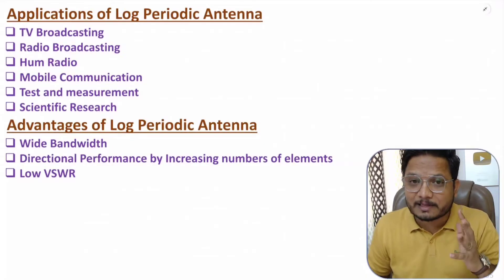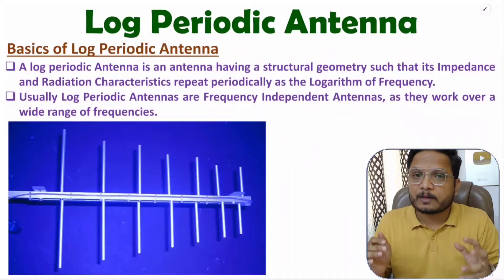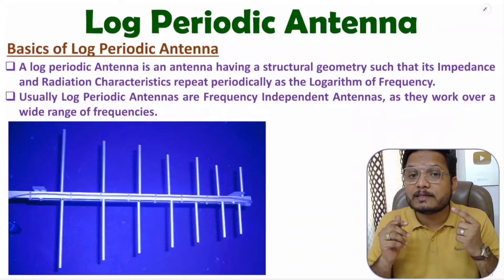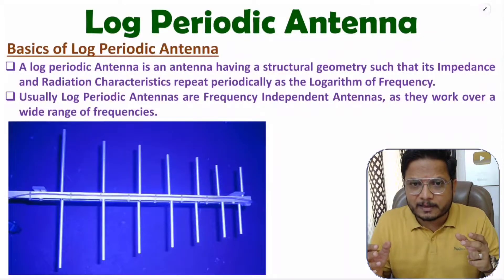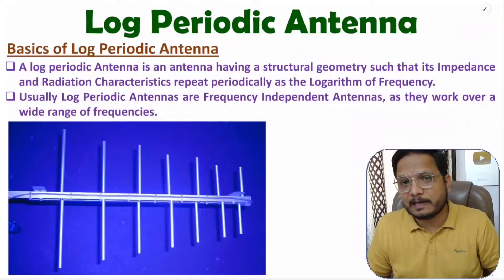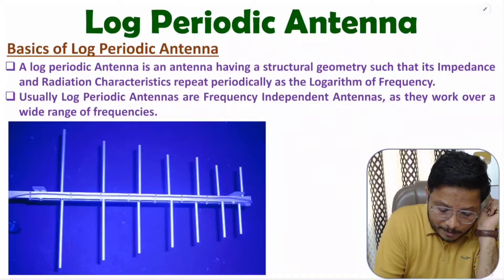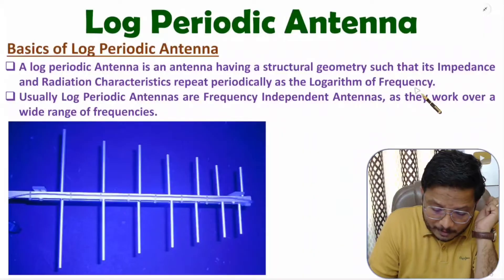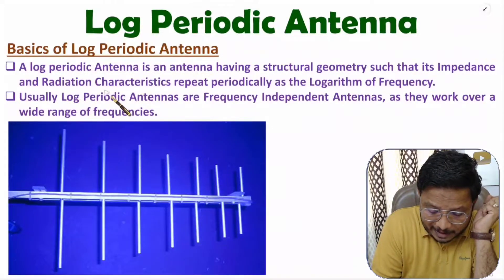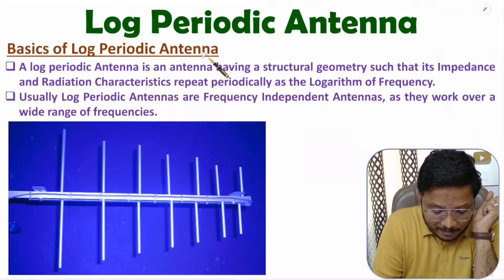Log periodic antenna functions over a wide range of frequencies, because of which it is also known as a frequency independent antenna. It has broadband characteristics. The meaning of 'log periodic' is that it has a logarithmic function of frequency — its radiation characteristics repeat periodically as a logarithmic function of frequency.